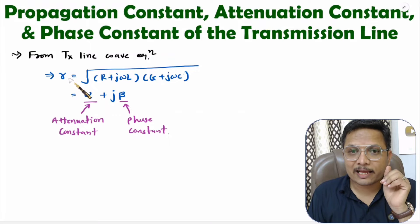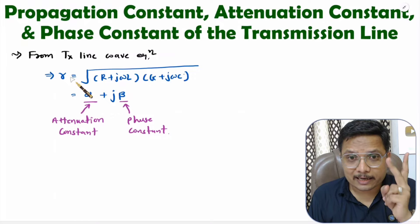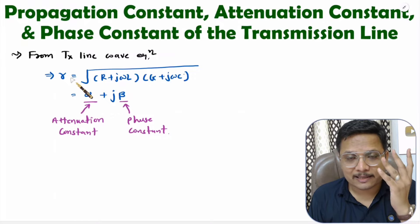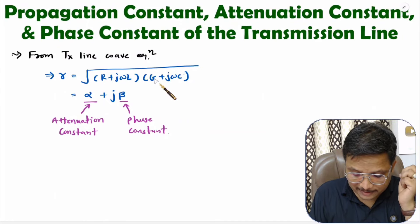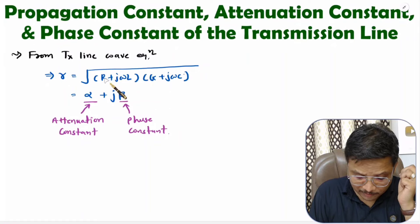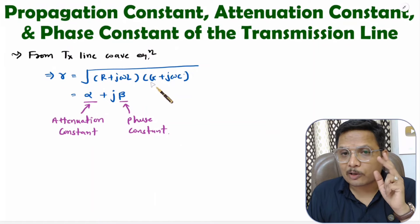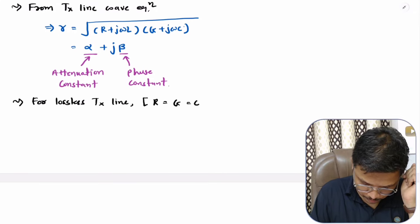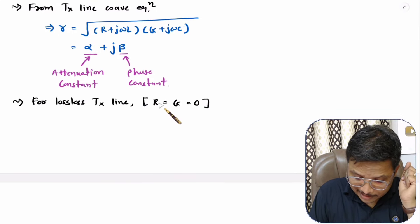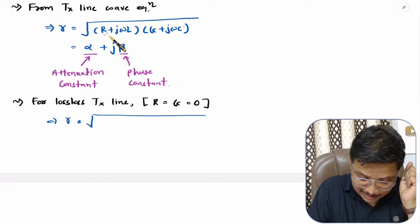With the transmission line equivalent circuit, there are four components: resistive, inductive, capacitive, and transconductive. If you observe gamma, it is based on R, L, G, C. With a transmission line, loss happens because of resistance and transconductance. So for a lossless transmission line, the values of R and G will be zero. Based on that, if you want to calculate the propagation constant, then gamma = √[(R)(G)] where R and G are zero.